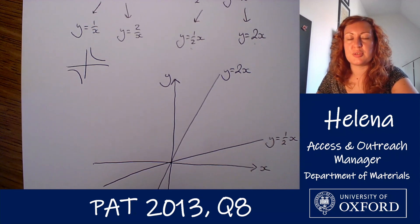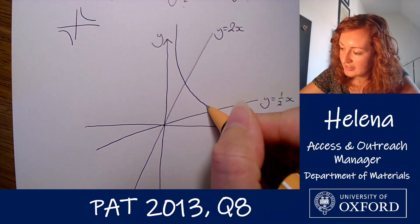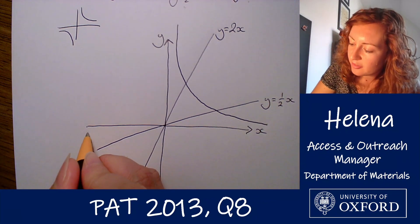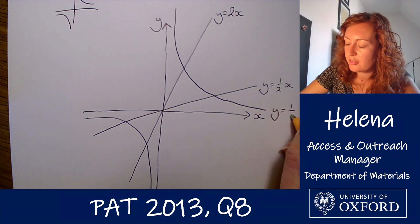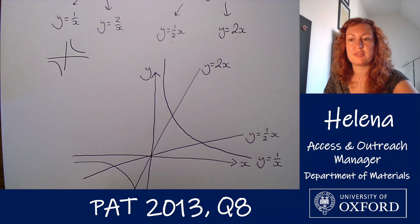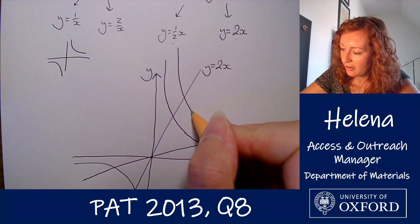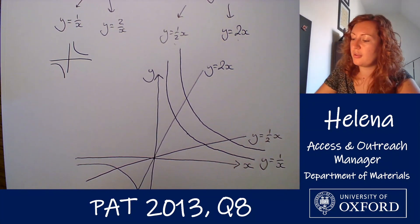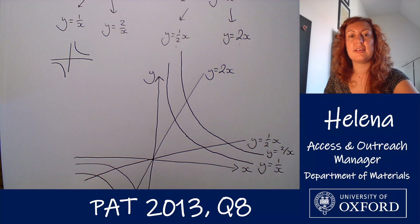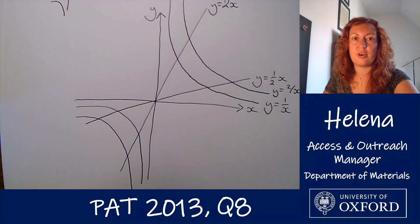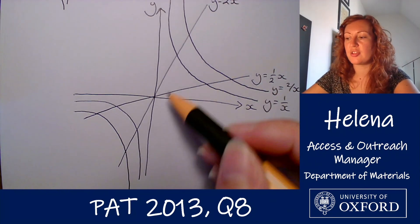For the 1/x type curves, y = 1/x is asymptotic at each axis and has the same shape in the third quadrant. Then for y = 2/x, it follows the same sort of shape but has slightly higher values — essentially two times the values on the 1/x graph.